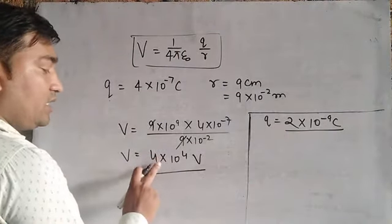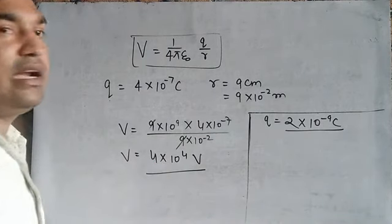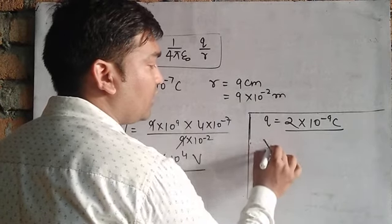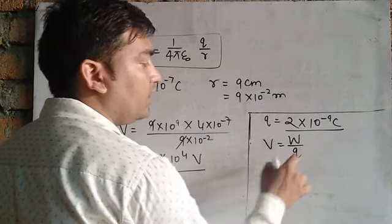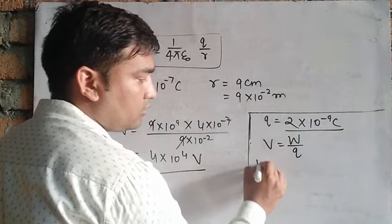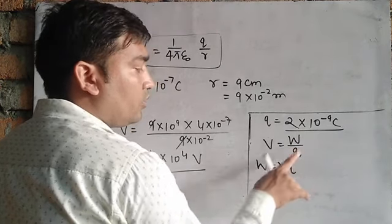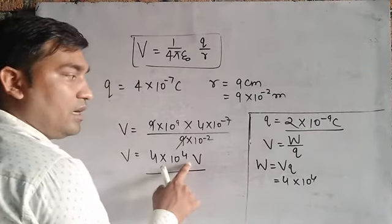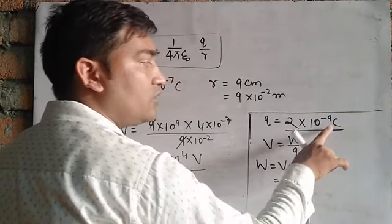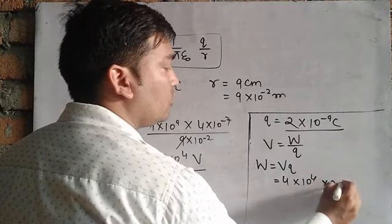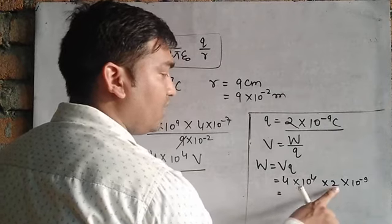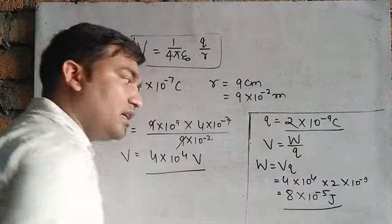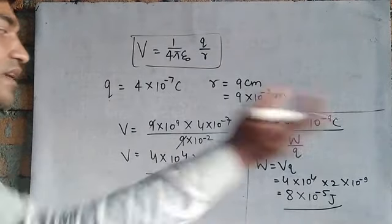The potential at point P is 4 into 10 to the power 4 volts, and we need the work done in bringing a charge of 2 into 10 to the power minus 9 coulomb from infinity to point P. According to the definition of potential, V equals W by Q, so W equals V into Q. V is 4 into 10 to the power 4 and Q is 2 into 10 to the power minus 9. After solving, W equals 8 into 10 to the power minus 5 joules. This is the work done in bringing the charge from infinity to point P.